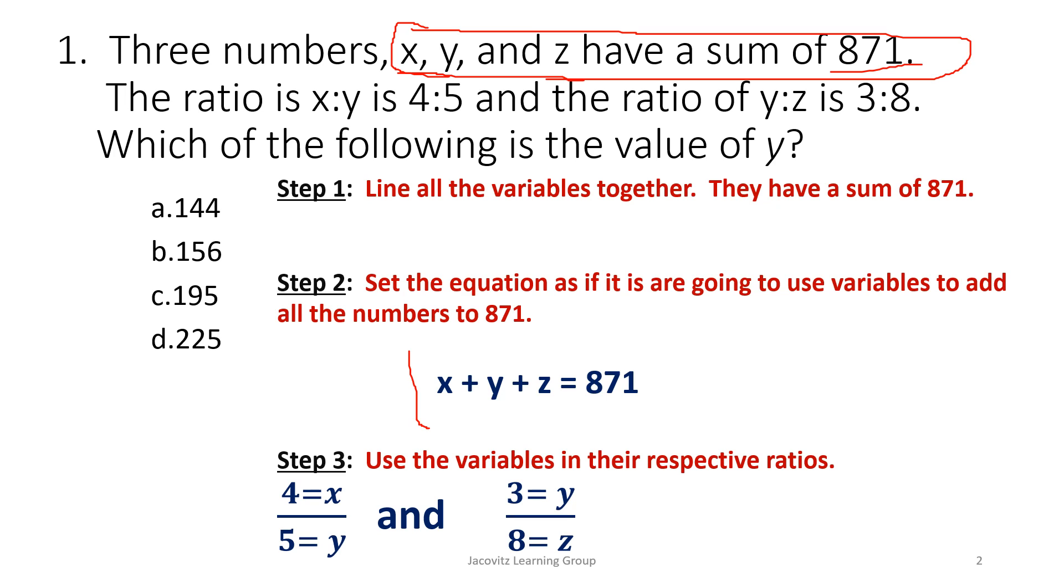And your ratio is 4 equals x and 5 equals y, and 3 equals y and 8 equals z. And already you see you have two different values for y because the first one is x when it's compared to y, and then the next one, y is compared to z.